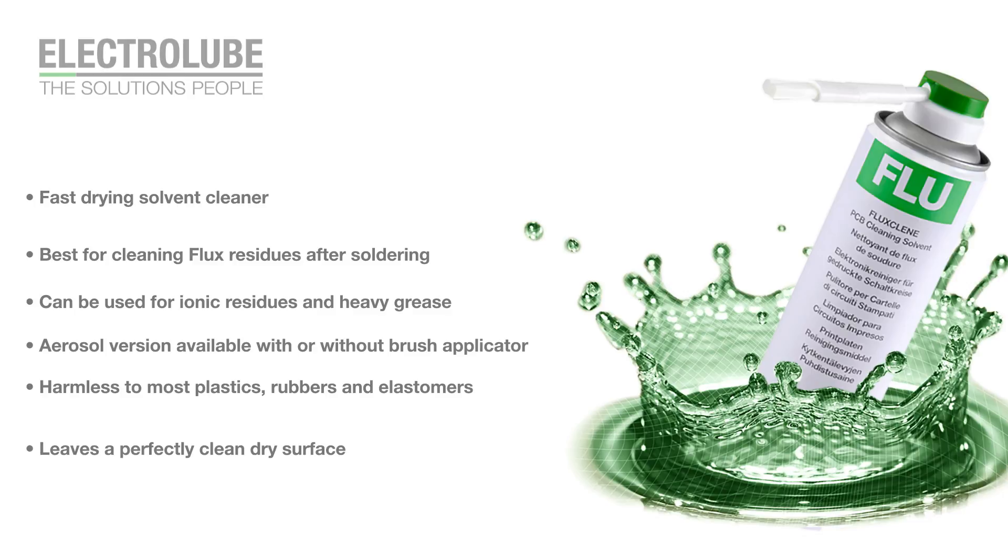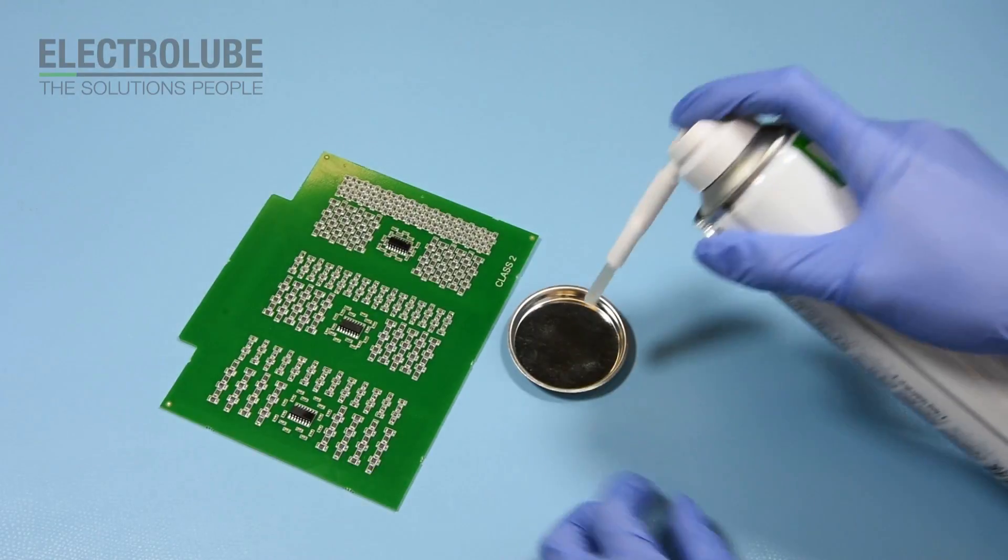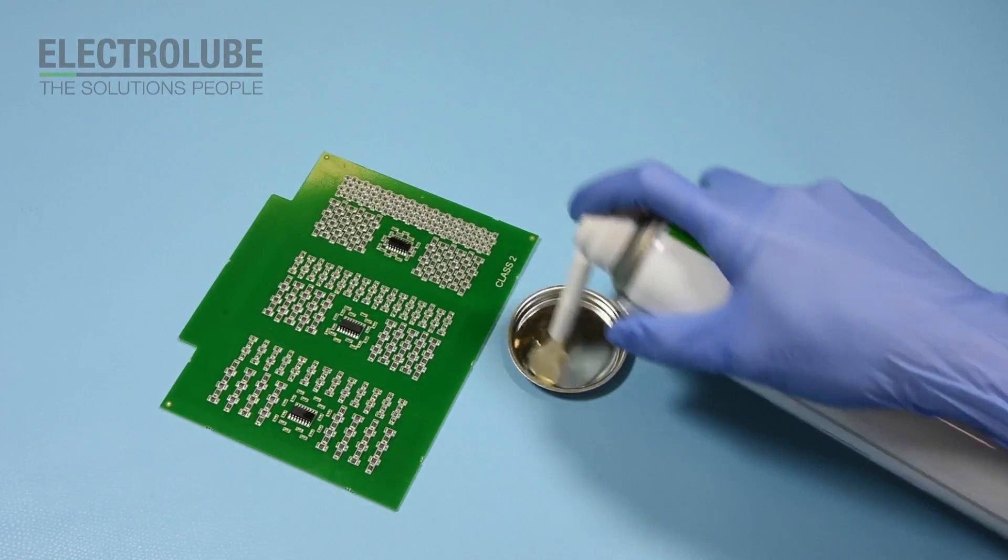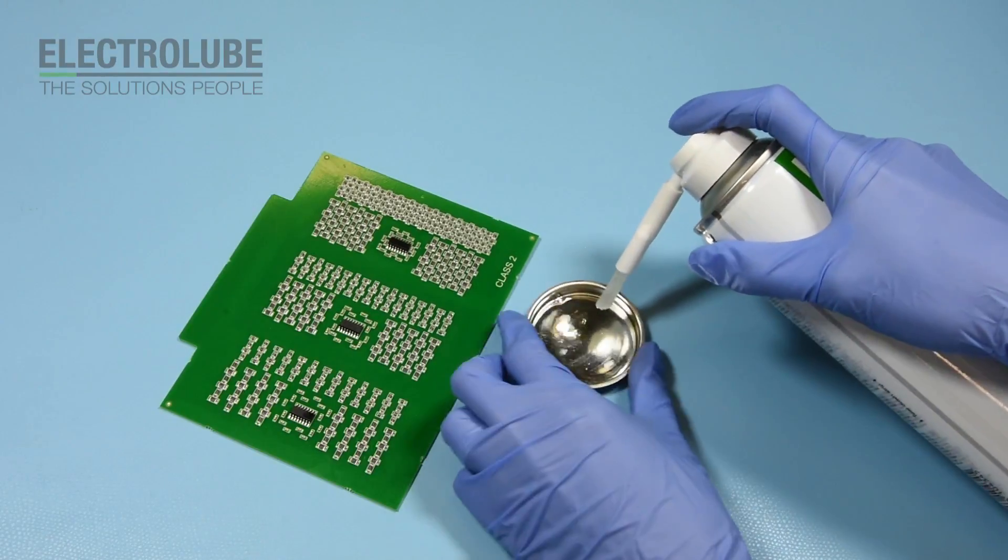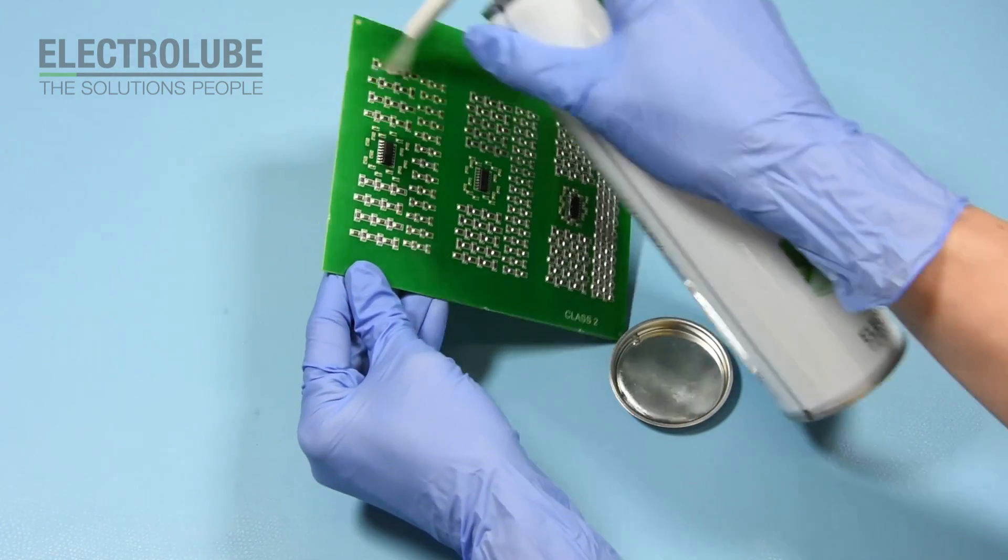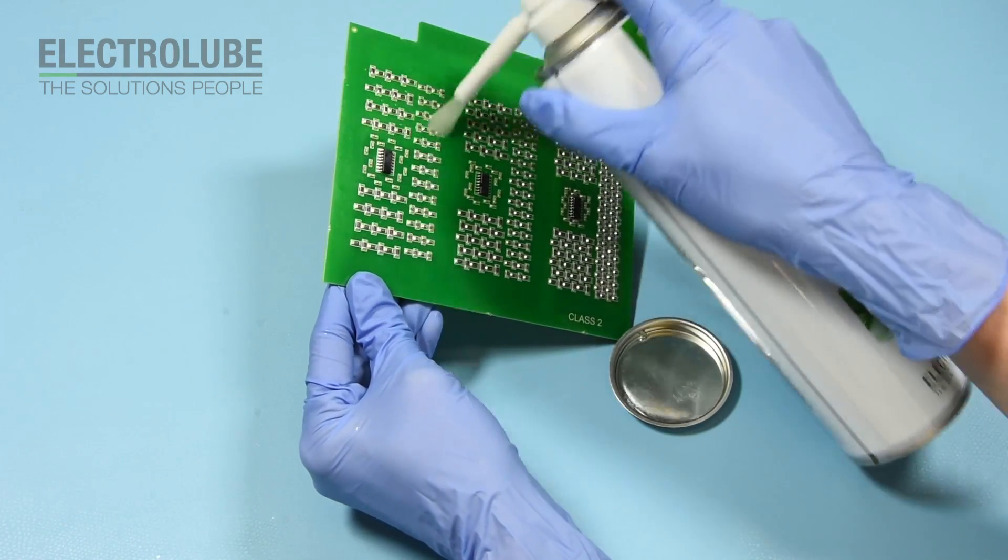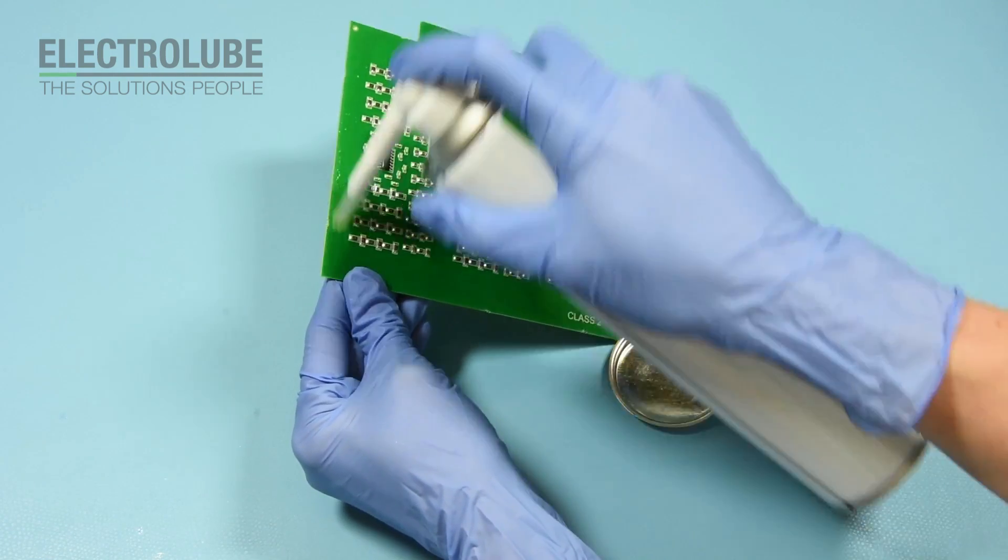Remember to clean the brush before each use to ensure no contaminates are added to the board. Tilt the board and start at the top working downwards so that the contaminates are washed down and off the board.